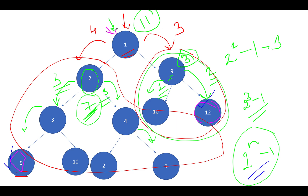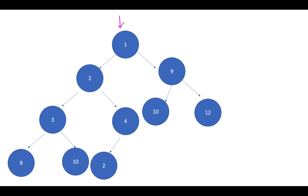Let's take another example. The height of the leftmost child is 4 and the height of the rightmost child is 3 — a mismatch, so we can't use the formula. We recurse into the left subtree. There, the height of the leftmost child is 3, and the height of the rightmost child is 2 — again a mismatch. We go one level deeper to node 3.